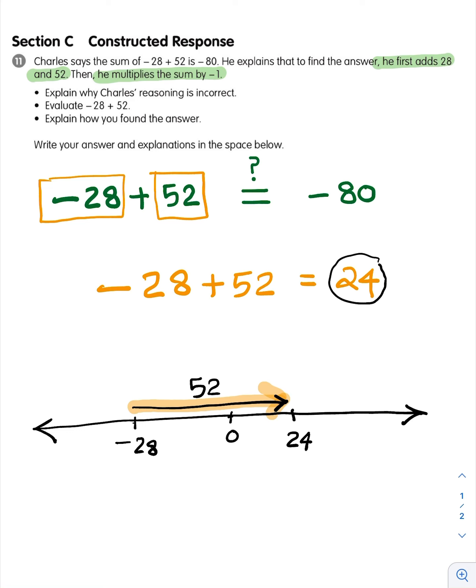And Charles's reasoning is incorrect. Because Charles, the problem that Charles solved is negative 28, negative 52. If that was the problem, then Charles would have gotten negative 80. And then Charles's logic would have been right. Does that make sense?